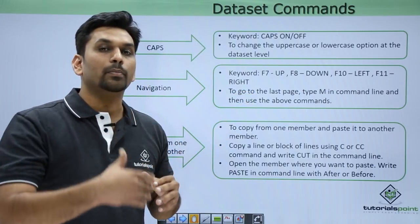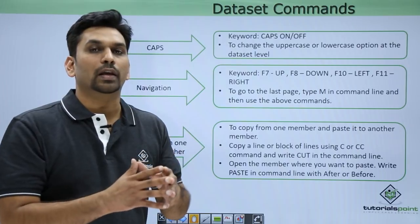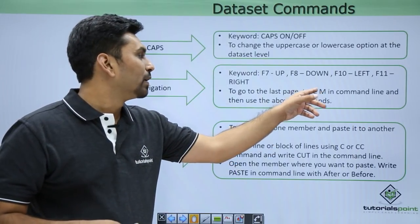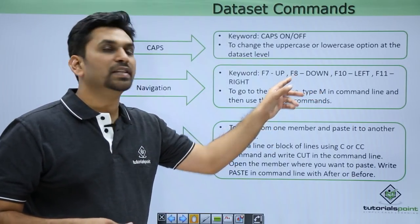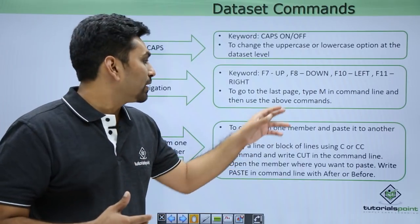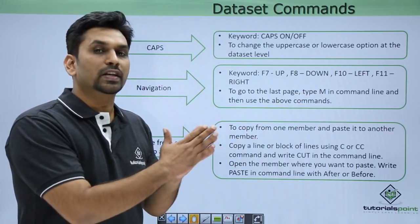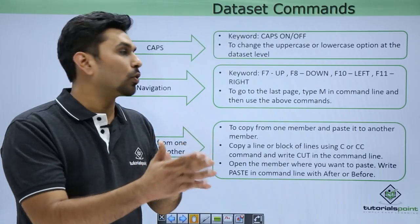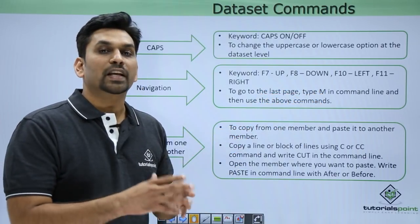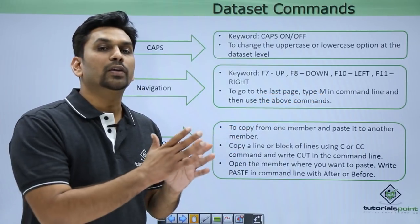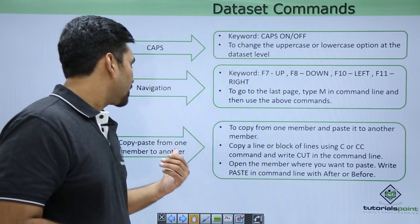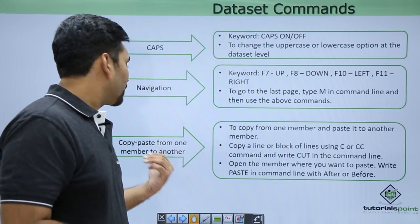To go to the extreme bottom of the file — the last line — type M in the command line and press F8. It will take you to the bottom. To go to the extreme right column, type M in the command line and press F11.